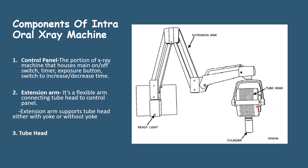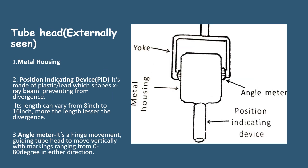This is the tube head. The tube head consists of two parts: ones which are externally seen and others which are internally present. The externally seen parts consist of the metal housing, the position indicating device or PID, and the angle meter.